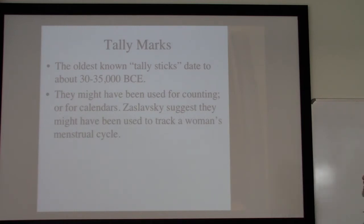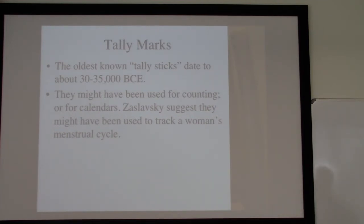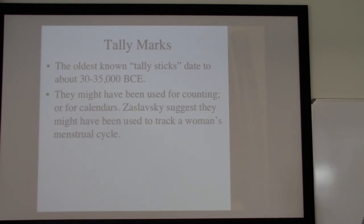These tally marks could have been used for counting, or very possibly for calendars. One of the early uses in cultures whose history we know is mathematical calculations for calendars and astronomical events. Claudia Zaslavsky suggests — especially because some of these tally bones seem to be cycled around roughly the length of a woman's menstrual cycle — that they might have been used to keep track of that, for issues of fertility, bleeding, or pregnancy.